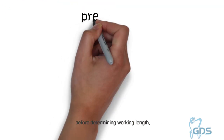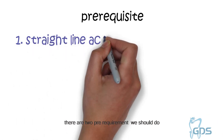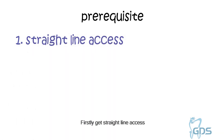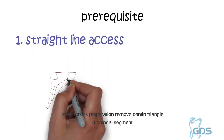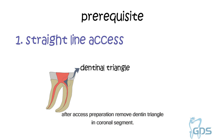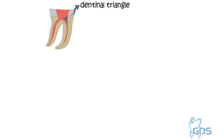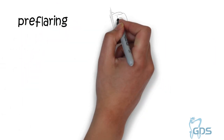Before determining working length, there are two pre-requirements we should do. Firstly, get straight line access. After access preparation, remove the dentine triangle in the coronal segment. This can be achieved by pre-flaring.